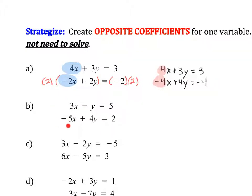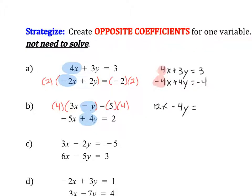Now let's look at the next set. If I look at my x values, there's no easy way to turn a 3 into a 5. So I'll try looking at my y values. If this is a positive 4y, I would want this to become a negative 4y. It's already negative but right now it's negative 1, so we need to multiply both sides by positive 4. That gives us 4 times 3x equals 12x, 4 times negative y equals negative 4y, and 5 times 4 equals 20. The bottom equation stays the same, and we've created opposite coefficients.